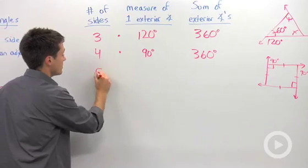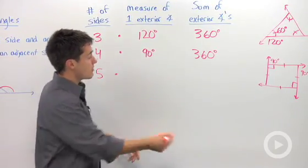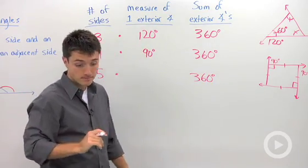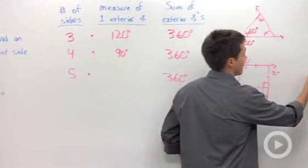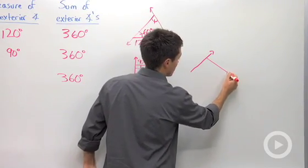I'm going to guess that for five, I'm going to multiply by something and get 360 degrees. Let's check it out. If I have a pentagon, I'll draw in my exterior angles here.